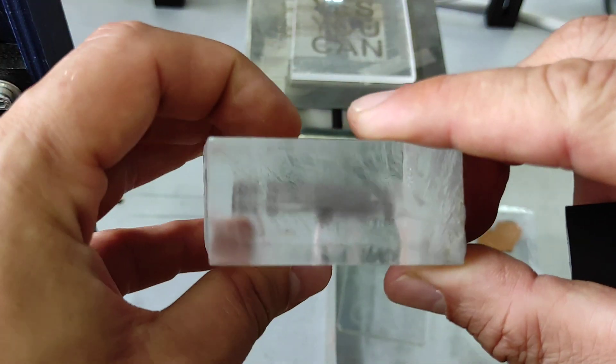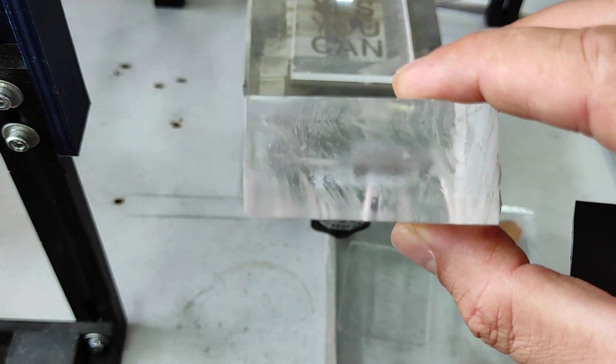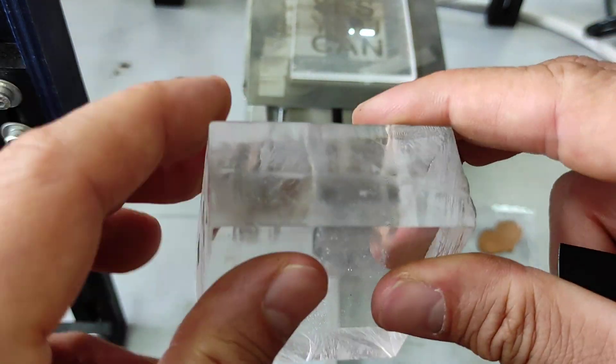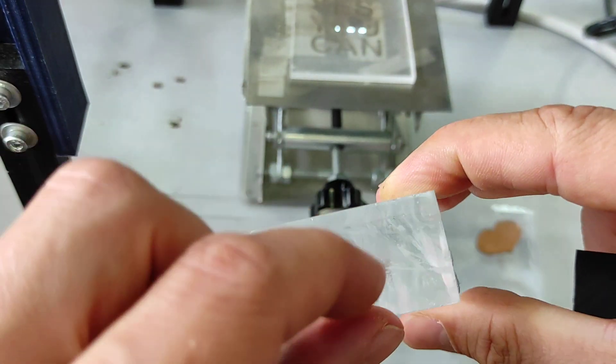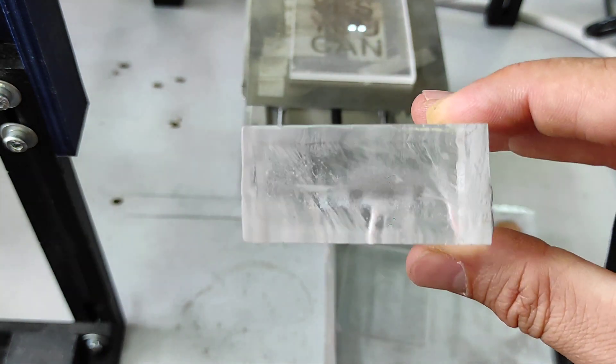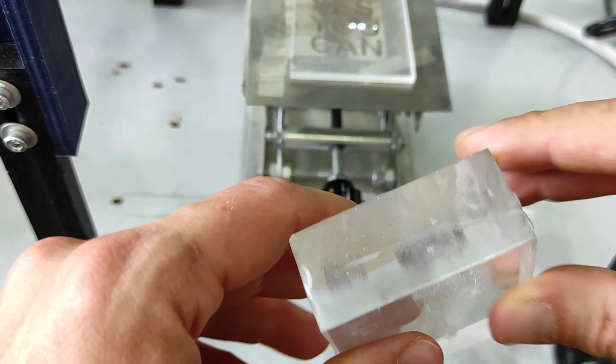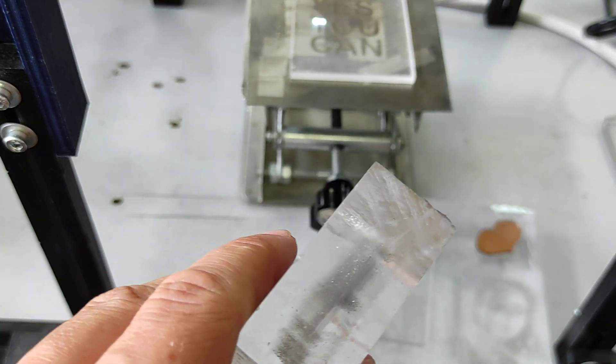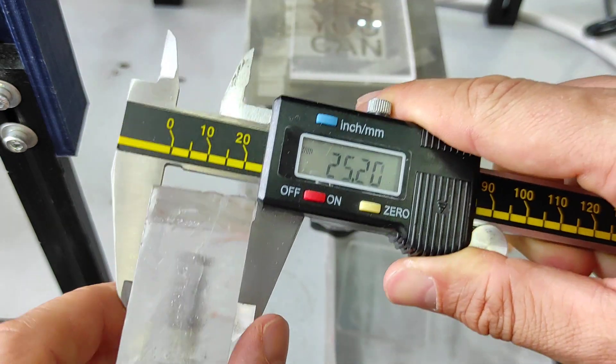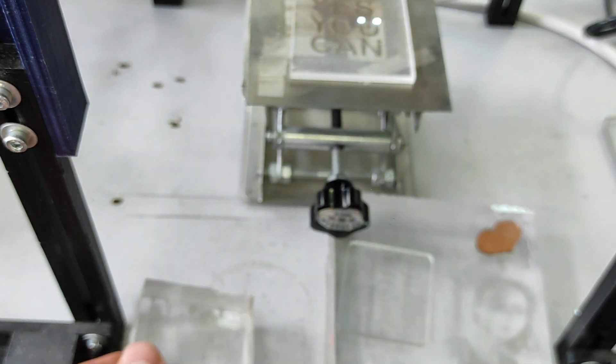The good thing is it engraves completely inside the acrylic, and the focus should be set up just somewhere here. This is 25 millimeter acrylic - 2.5 centimeters, about one inch. It's quite fascinating.